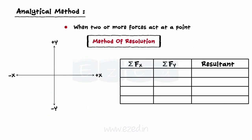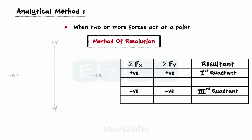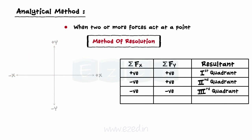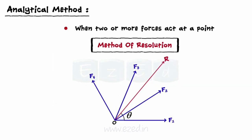Finally, we decide the quadrant of the resultant. If summation Fx is positive and summation Fy is also positive, then the resultant lies in the first quadrant. If both are negative, then the resultant would be in the third quadrant. If summation Fx is negative and summation Fy is positive, then the resultant would be in the second quadrant. Similarly, the resultant would be in the fourth quadrant for positive Fx and negative Fy. Thus, we can find the resultant of a concurrent force system of two or more forces.